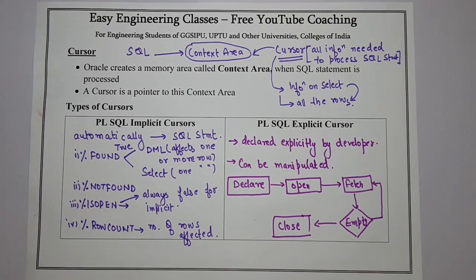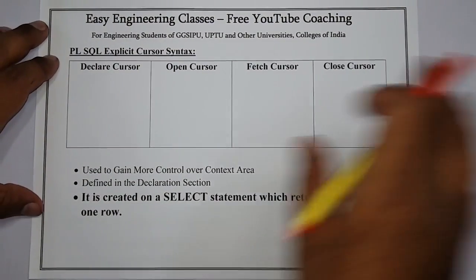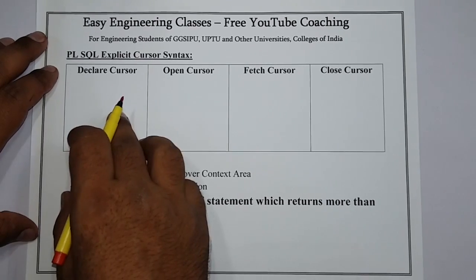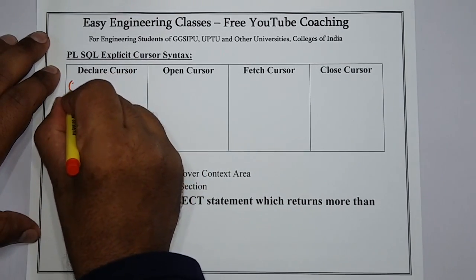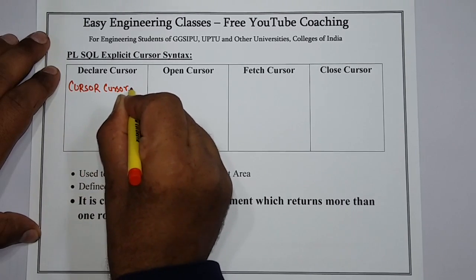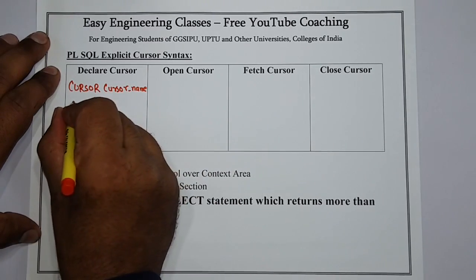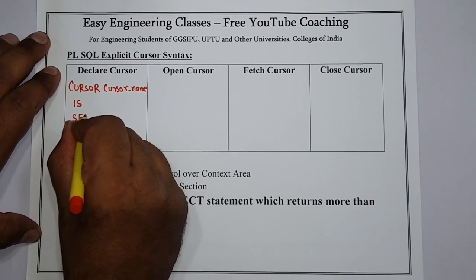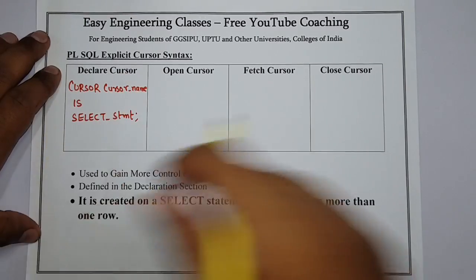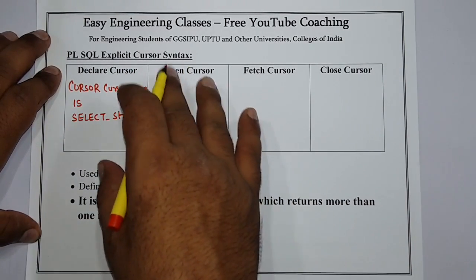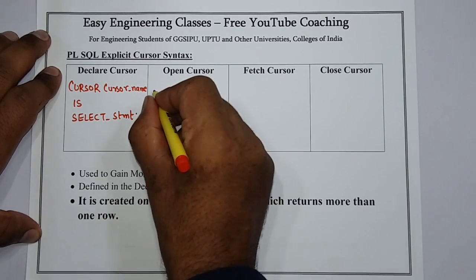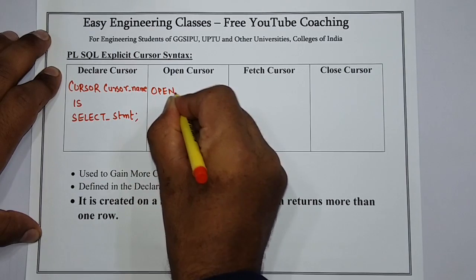Now we will see the syntax. The first step is to declare a cursor, which must be associated with a SELECT statement. The syntax is: CURSOR cursor_name IS SELECT statement. To open a cursor, the open statement executes the query and binds any referenced variable data. You write: OPEN cursor_name.